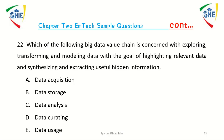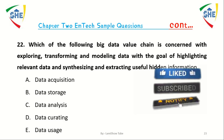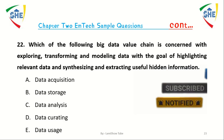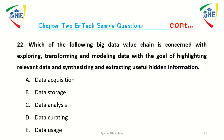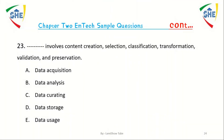Question number 22: Which one of the following big data value chain stages is concerned with exploring, transforming, modeling data with the goal of highlighting relevant data and synthesizing and extracting useful hidden information? A) Data acquisition, B) Data storage, C) Data analysis, D) Data curating, E) Data usage.